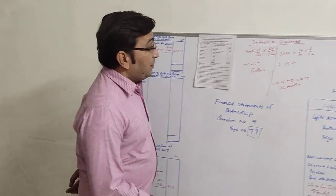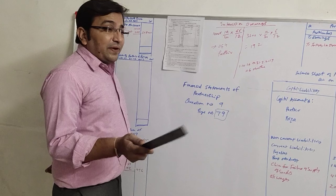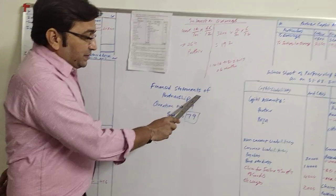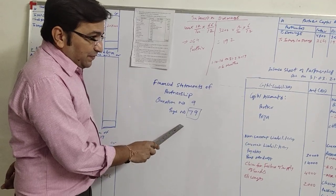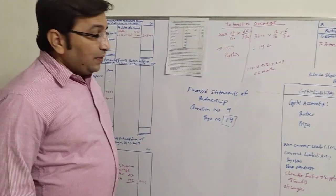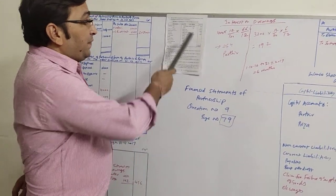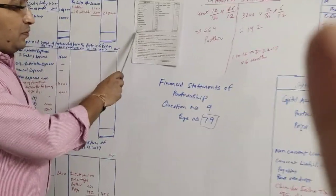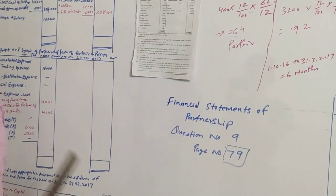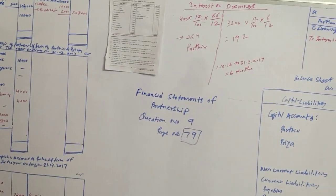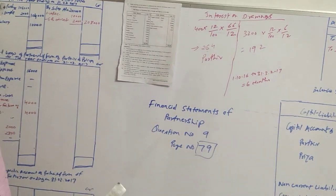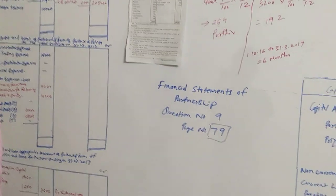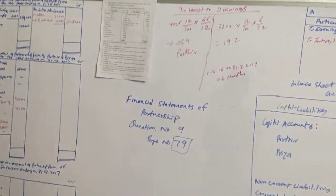Good morning once again. We are on Sum No. 9 of Financial Statement of Partnerships, Page No. 79. In the previous video, we finished with the trial balance. In this video, we are going to know the effects of adjustments. Six adjustments are given to us, and one by one we will take all adjustments and give their effects.